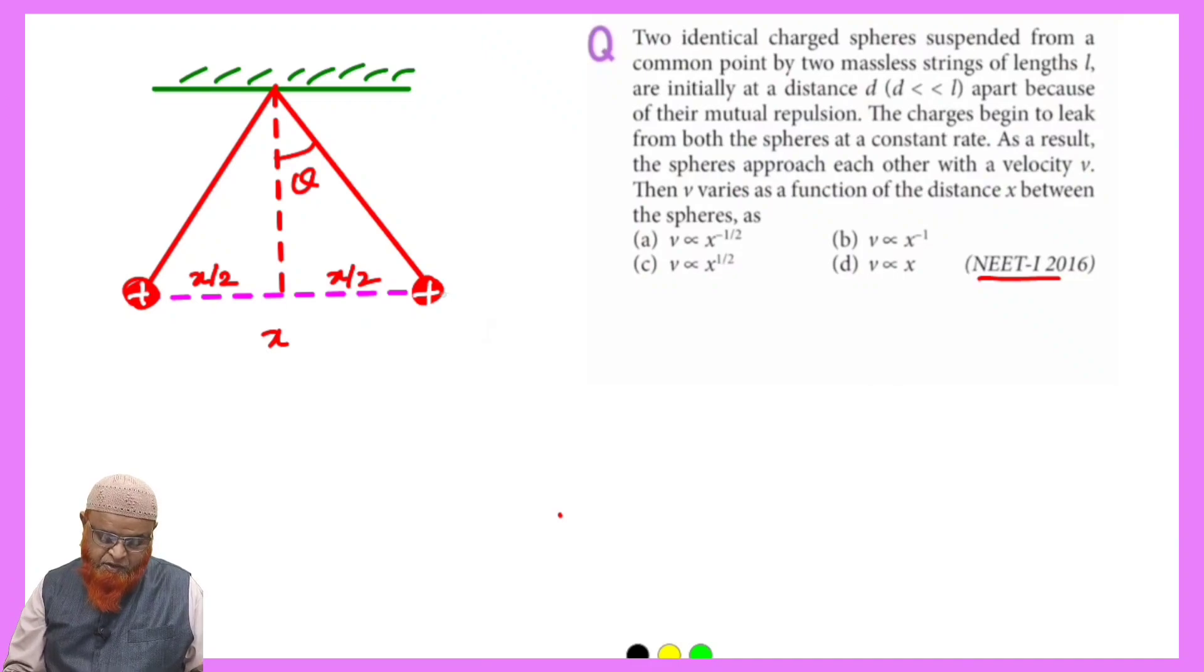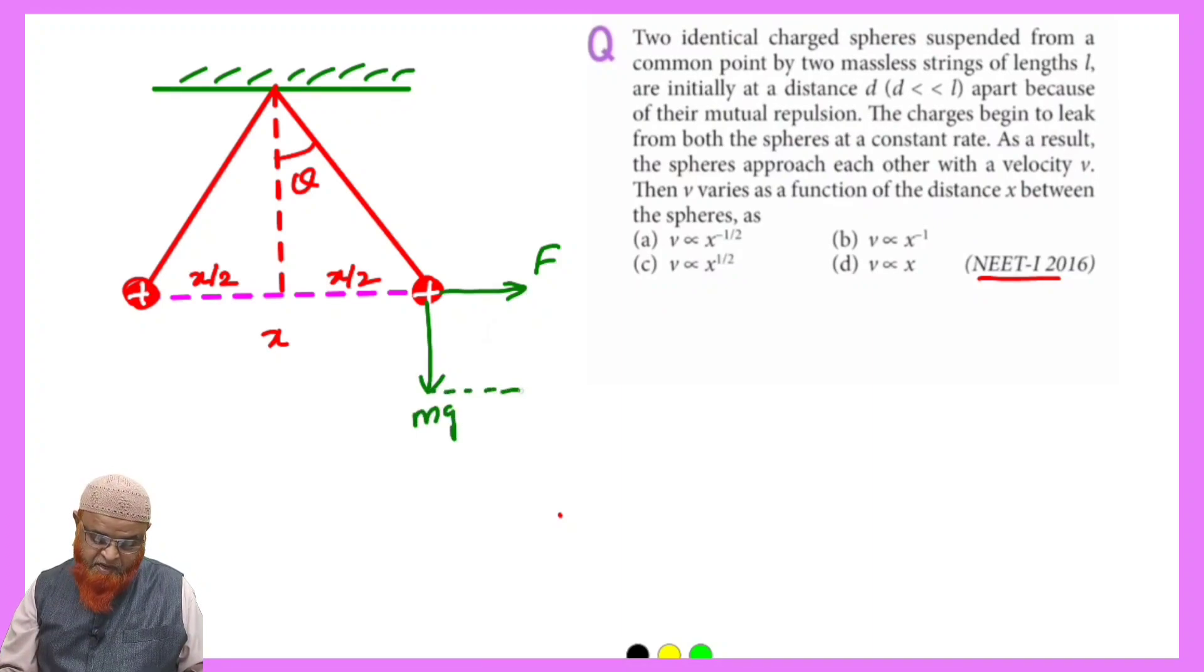Then what are the things we're going to find here? Force is acting in this direction, mg is acting downwards, and the resultant of these two can be taken like this. So this is going to be the resultant here.